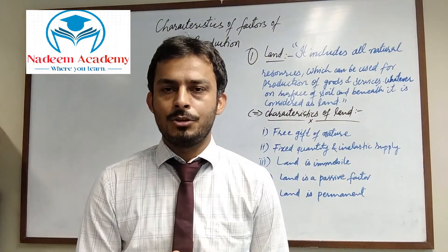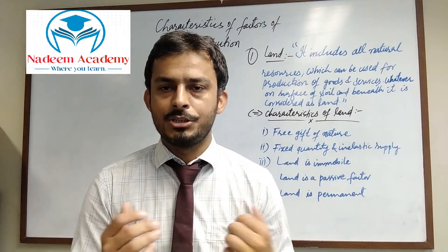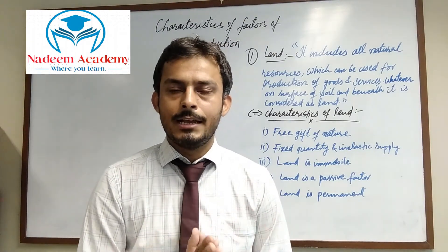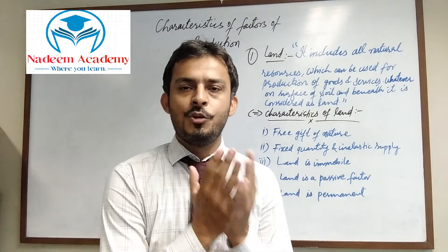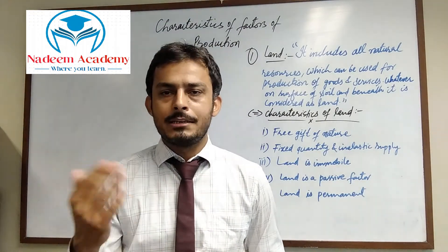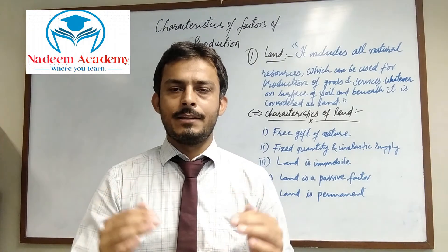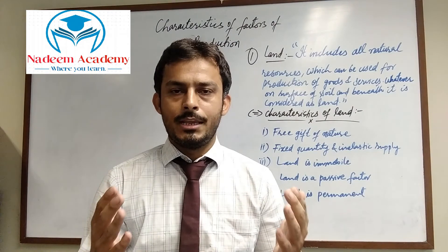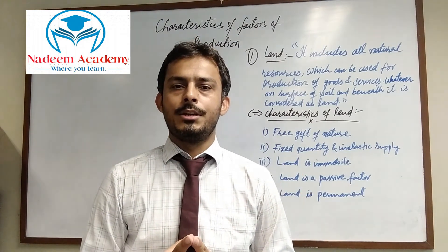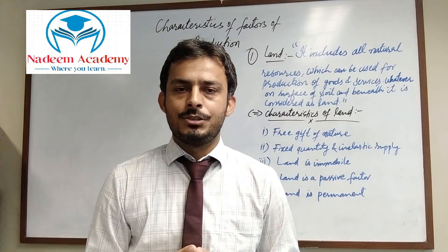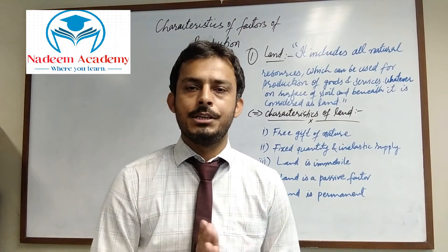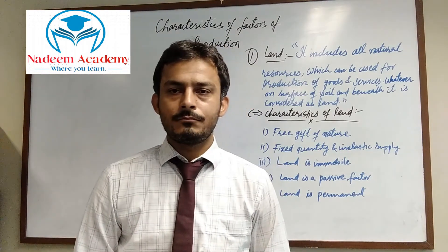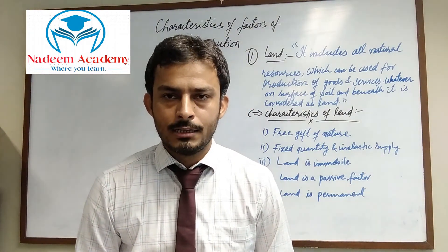The fourth characteristic is that land is a passive factor. Land itself is not going to work on its own. Unlike capital — like machinery and technology which automatically work once started — land is a passive factor and human effort is required to make it active. For example, a piece of land available for agriculture will not produce anything unless labor cultivates it, except for natural vegetation.